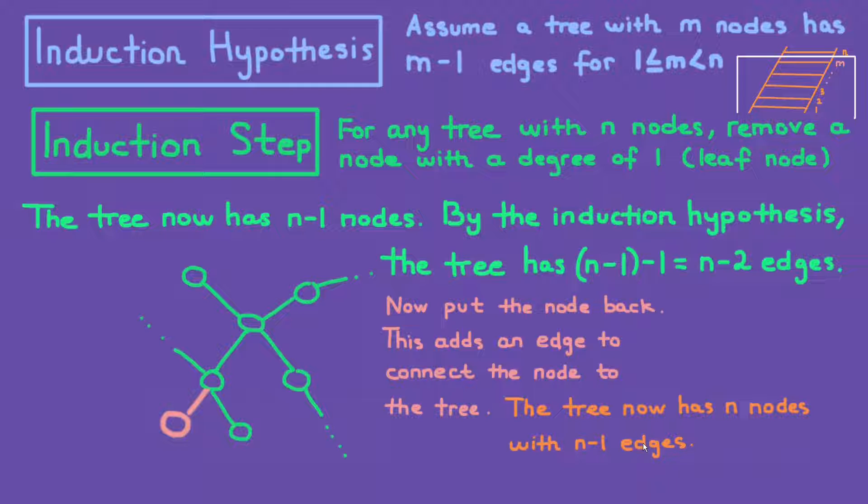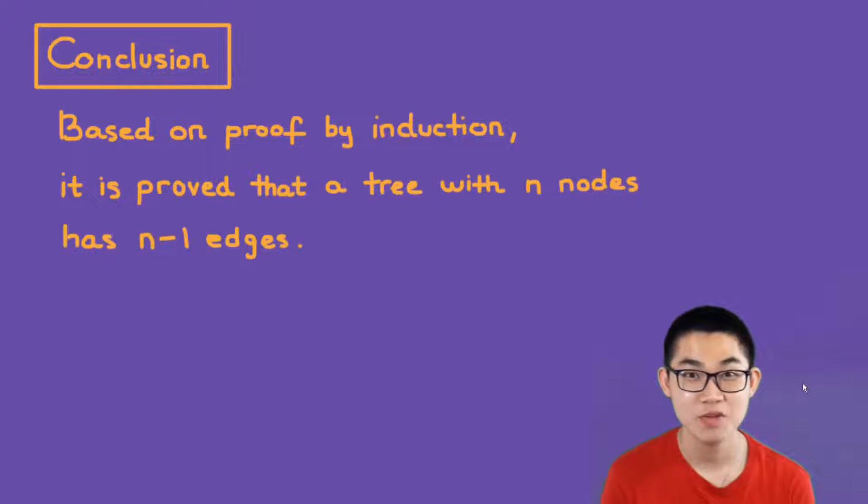So now you see that we just proved the statement is true when we have n. So a tree has n nodes and then we show that it has n minus 1 edges. And since we proved that the statement is true with n vertices or n nodes, the last step is just the conclusion. So based on the proof by induction, it is proved that a tree with n nodes has n minus 1 edges.